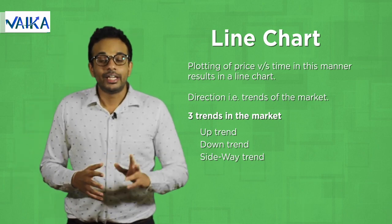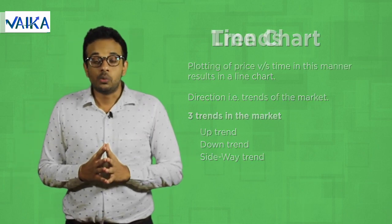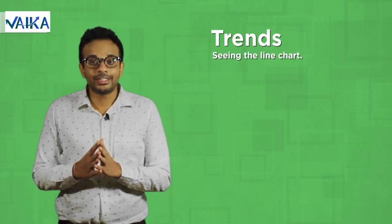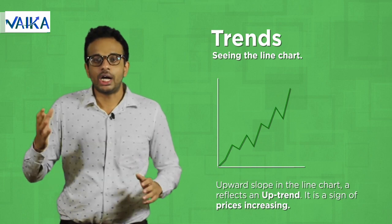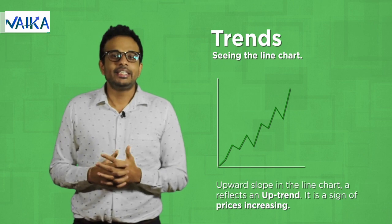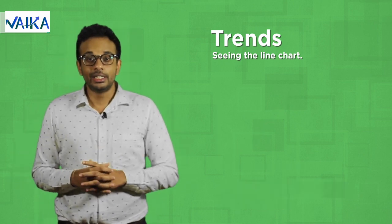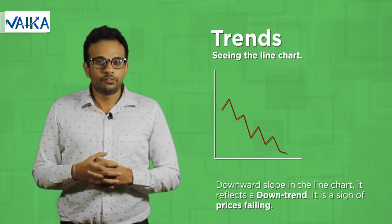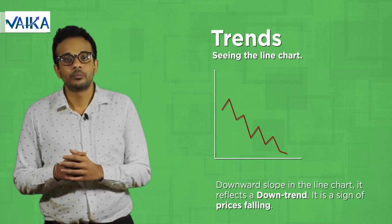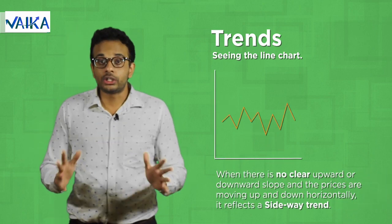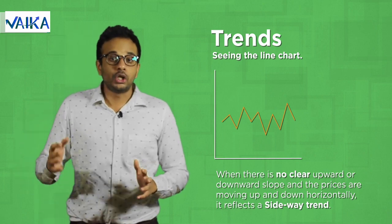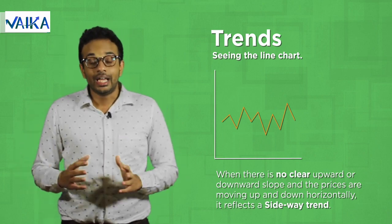We can define trends in two ways. One of the ways is by simply seeing the chart. Just like the name suggests, when you see an upward slope in the line chart, it reflects an uptrend — it is a sign of prices increasing. Similarly, a downward slope in the line chart reflects a downward trend, which is a sign of prices falling down. When there is no clear upward or downward slope and the prices are moving up and down horizontally, it reflects a sideway trend.